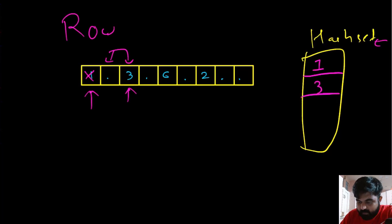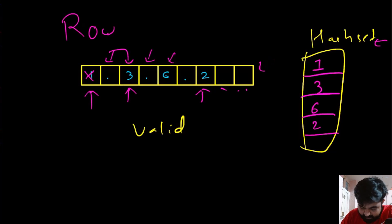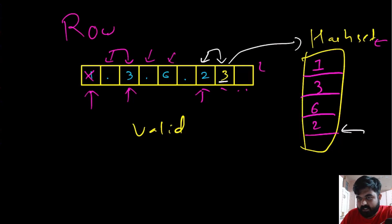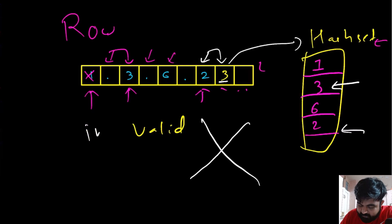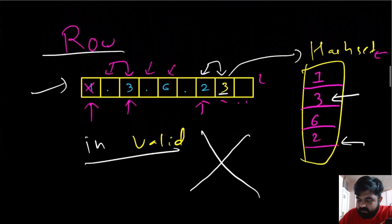Let's walk through the row. At position one, nothing is in the hash set, so we add entry one. The next cell is a dot, so we skip it since we're only concerned with filled elements. We add three, then six, then two. We reach the end of the row without finding any duplicated entries, so this particular row is currently valid. But if the last cell had a three instead, we would find three already present in the hash set and immediately call the sudoku invalid.